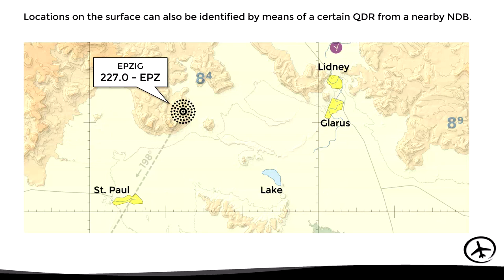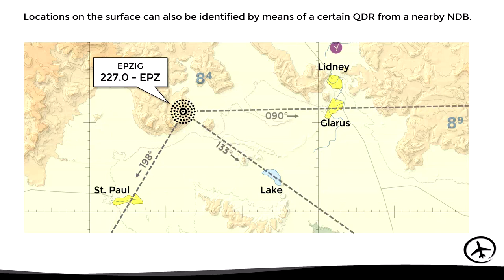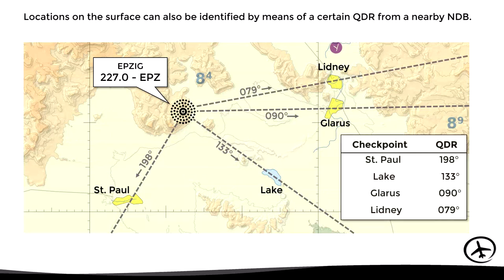For example, the town of St. Paul is located on the QDR 198 from EPSIG NDB. This lake is on the QDR 133, Glarus is on the 090, and Lydnay on the 079. So with this, if the aircraft is equipped with an ADF or RMI, the pilot can use this information to complement the intended VFR navigation plan.